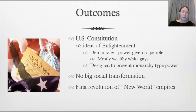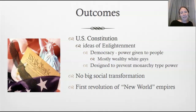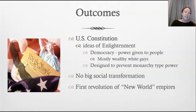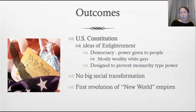The overall outcomes: the US Constitution was written — the one we still have today — and we can see many Enlightenment ideas in it, such as democracy, though mostly for wealthy white men. It was also designed to prevent a monarchy type of power — no more kings. Overall though, there was no big social transformation in terms of class, slavery, or gender, but the colonists did get rid of British control. This was the first revolution of the new world empires.